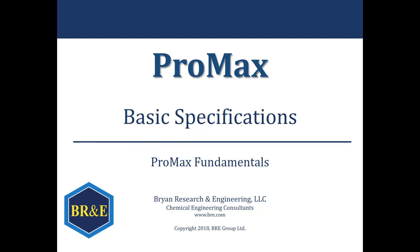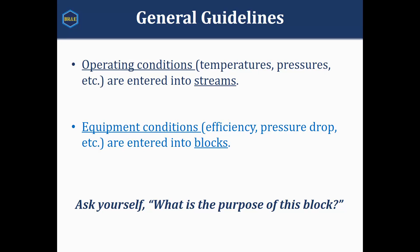To get this conversation started, let's talk about the difference in operating conditions versus equipment conditions. Operating conditions are things like our temperatures, pressures, and flow rates at different points. This type of information is generally inserted into the streams within PROMAX, whereas equipment conditions — efficiencies, pressure drop associated with the equipment itself — that type of information is going to be entered directly into the blocks.